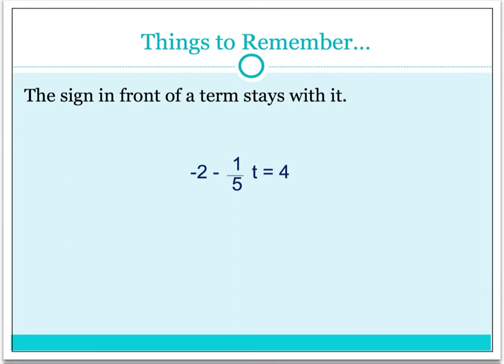Something else you'll need to remember is that the sign in front of a term stays with it. This negative sign has to stay with the 2, and this negative sign has to stay with the 1/5 t. So each term has a sign and that sign must stay with it. The reason that's important is when we begin to solve this equation, we notice that t is on the left-hand side. We have to get rid of the negative 1/5, and we also need to undo the negative 2.